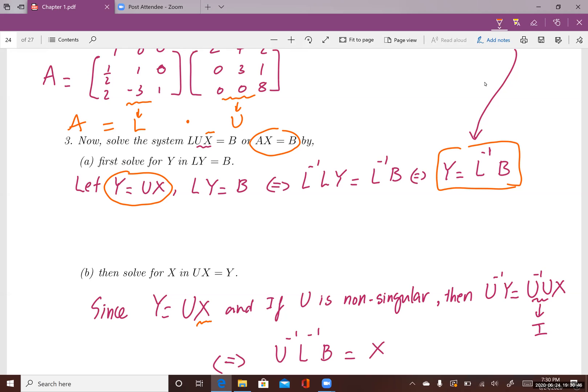If I know that U is non-singular, then U inverse exists. And if U inverse exists, then I could multiply U inverse to both sides of this equation. I have to assume that if U is non-singular, then I just multiply U inverse to both sides to solve for X.